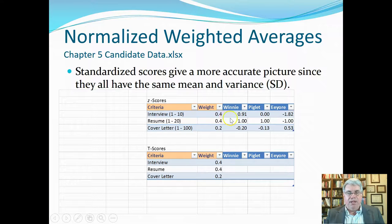So, let's suppose we've already converted the raw scores into Z-scores, and we can see that Winnie did very well on the interview. He was almost one standard deviation above. Piglet did average, and Eeyore was a disaster. On the resume, Winnie did very well, and so did Piglet. But, Eeyore didn't do very well on the resume. However, on the cover letter, both Winnie and Piglet didn't do very well, but Eeyore had a pretty classy cover letter. He had Al proofread it for him.